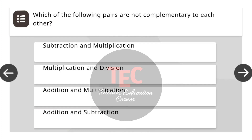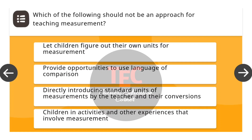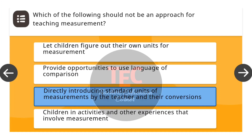Next question: Which of the following pairs are not complementary to each other? The correct answer is subtraction and multiplication. Next question: Which of the following should not be an approach for teaching measurement? The correct answer is directly introducing standard units of measurements by the teacher and their conversions.